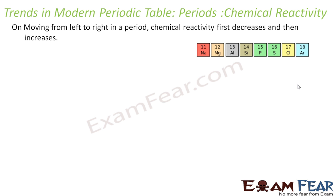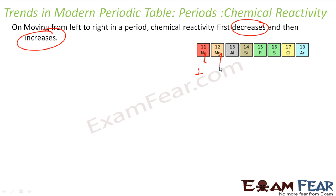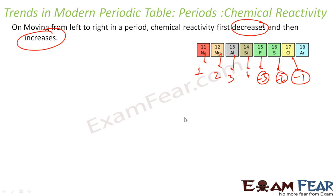If you talk about chemical reactivity, the reactivity first decreases and then increases. Why? Because elements with one extra electron can give it easily and are more reactive. Elements with two extra electrons take longer — less reactive. Elements with three extra are less reactive still. Elements with four extras are even less reactive. Then, elements that need electrons: one that needs three is somewhat reactive, one that needs two is a little more reactive, and one that needs only one is most reactive. So reactivity goes down and then back up across the period.